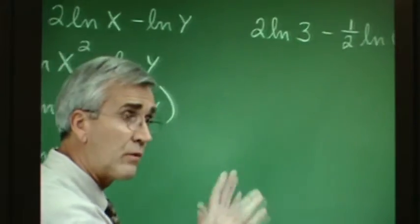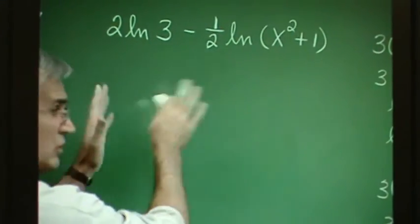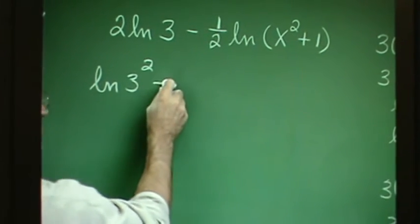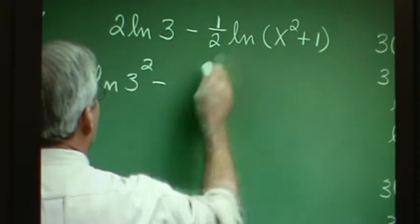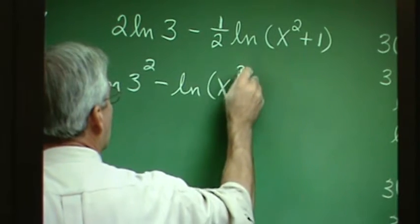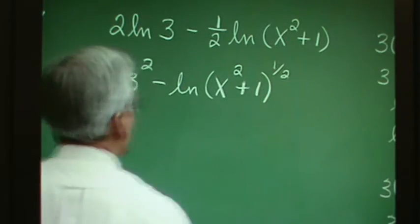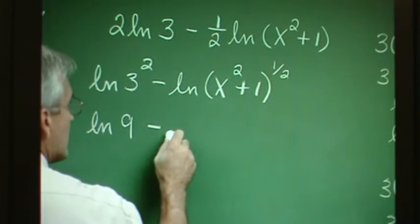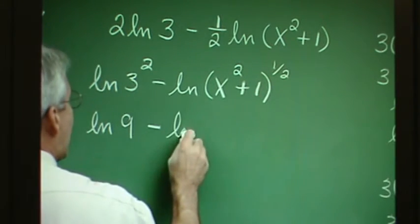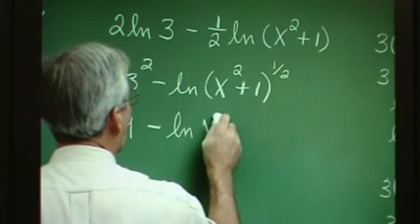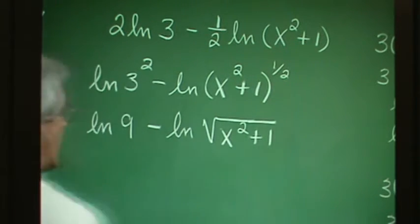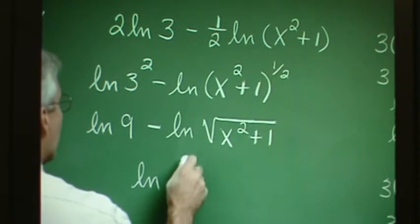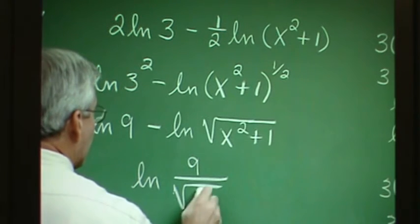In this problem, again we take coefficients and clear them to the position of exponents. This is ln 3 squared, then minus, leaving the minus sign, the one-half goes as the exponent, giving ln(x squared plus 1) to the one-half power. Now 3 squared is 9, and the one-half exponent means we have a radical — the square root of x squared plus 1. We have the difference of logarithms, which gives the logarithm of a quotient: the logarithm of 9 over the square root of x squared plus 1.